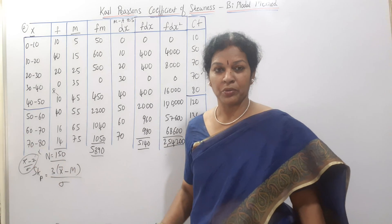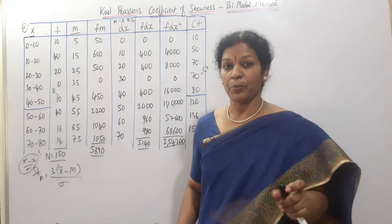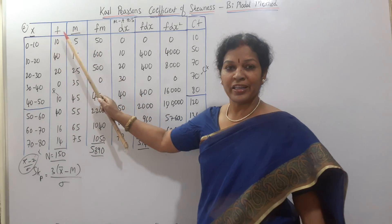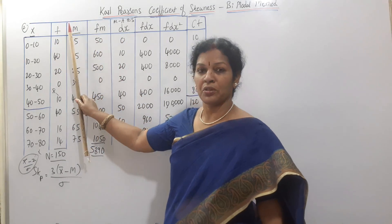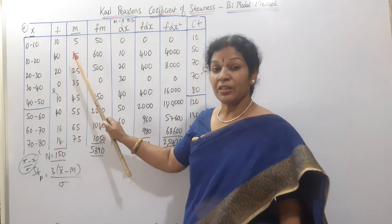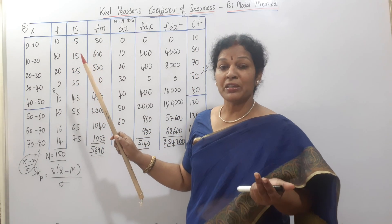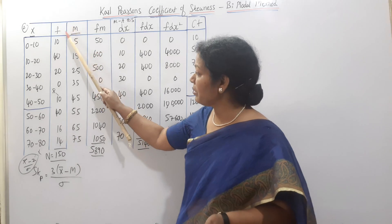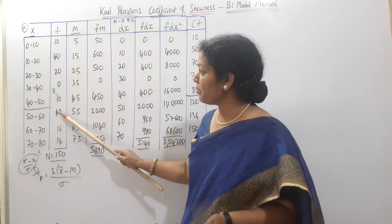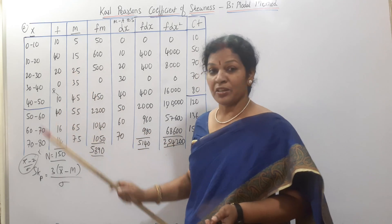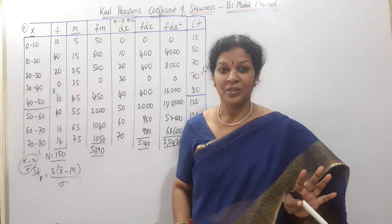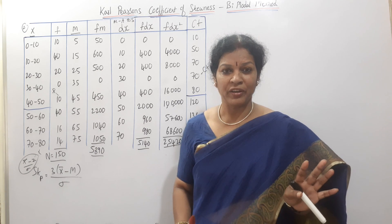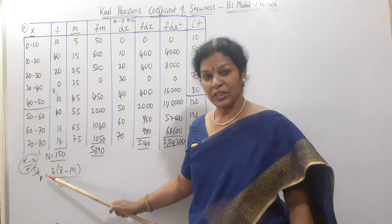If you can't define the mode — for example, when we have x and frequency data and there are two different highest frequencies, say both are 40 — the mode is ill-defined. This is the bimodal situation, so we use the bimodal formula.